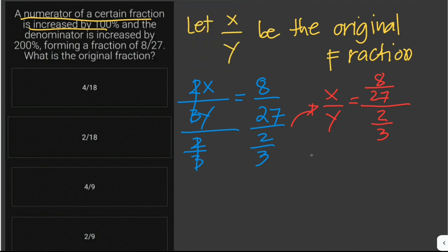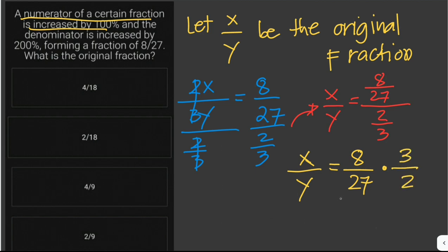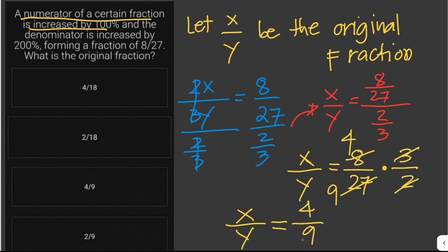To solve x over y, we take eight over twenty-seven and multiply by the reciprocal of two-thirds, which is three over two. Twenty-seven is divisible by 3, giving 9; eight is divisible by 2, giving 4. Therefore x over y, the original fraction, is four over nine.